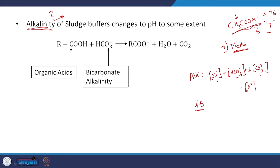If there are other bases that can neutralize the acid in this pH range, then you will have to add those bases too. As you can see, if the system is typically around pH 7, you can neglect some terms and in general alkalinity will be more or less equal to HCO3 minus. So what can HCO3 minus do? It can take up the relevant proton and go to H2CO3.